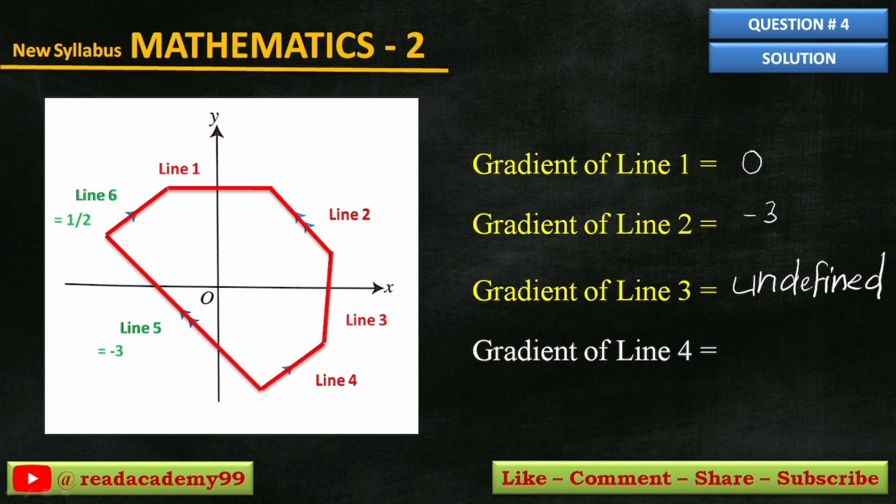And line 4 is parallel to line 6, so its gradient will be the same as line 6, which is 1 by 2.